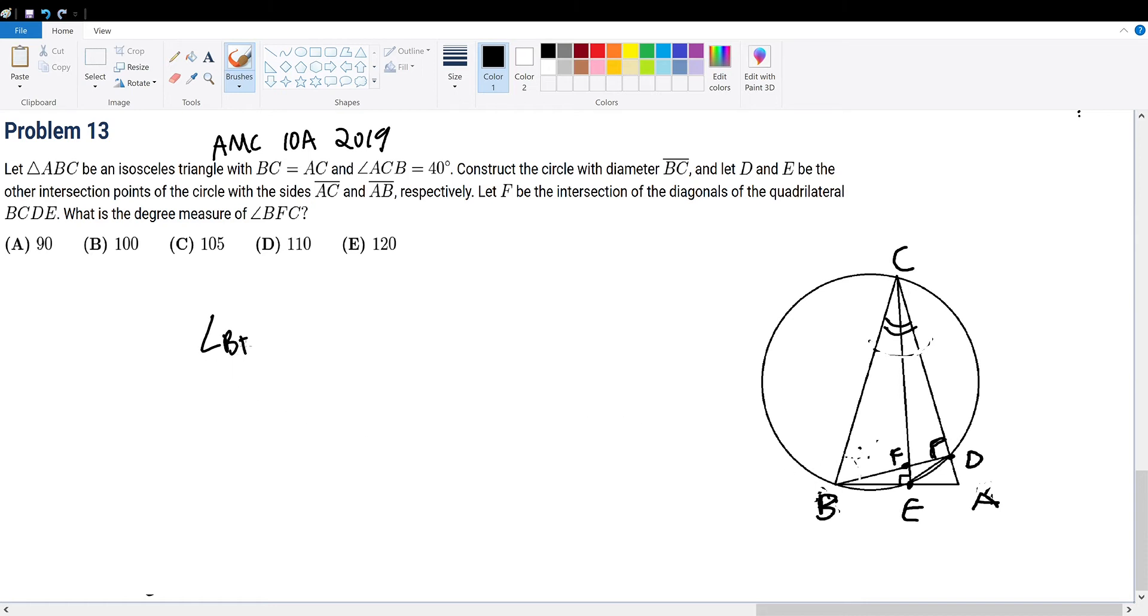Well angle BFC can be found within triangle BFC because that obviously has that angle. And how do you find angle BFC in relation to other angles? Well angle BFC is the same thing as 180 degrees, the total interior sum of a triangle, minus angle BCF minus angle CBF. This should come as common sense and pretty intuitive just visually.